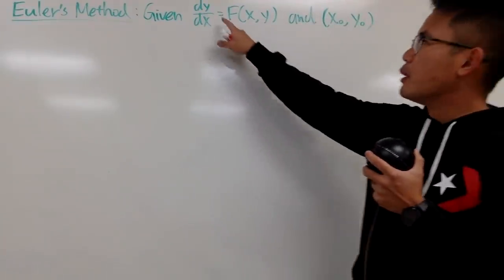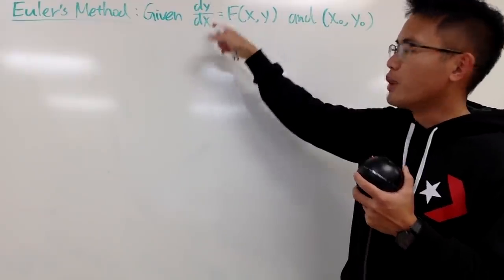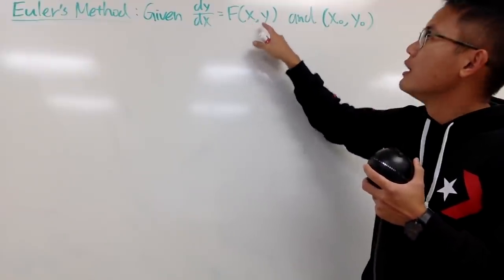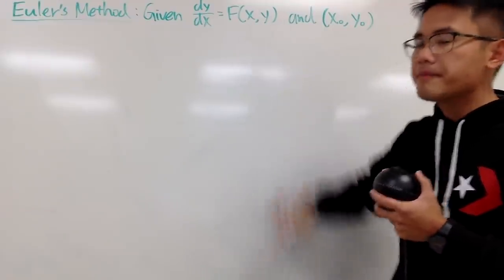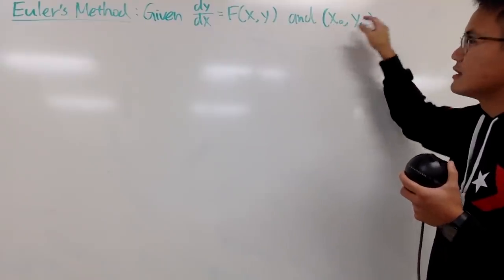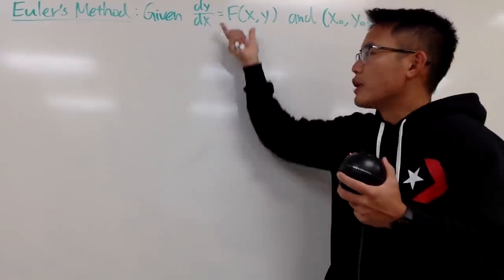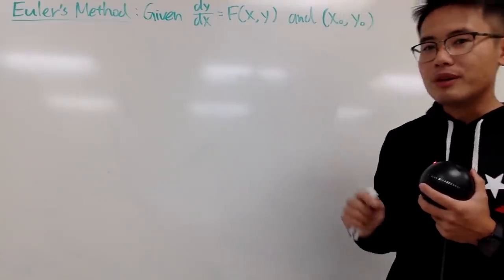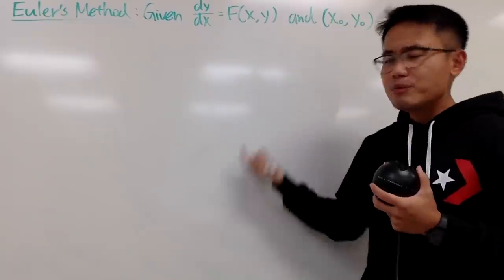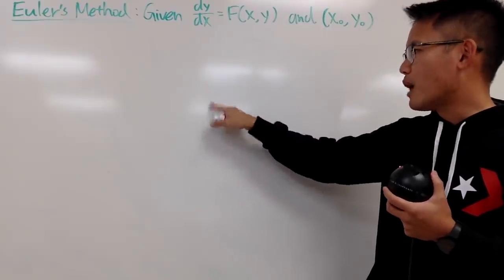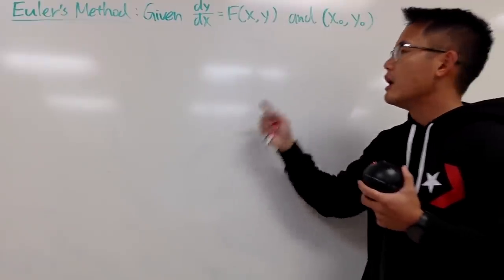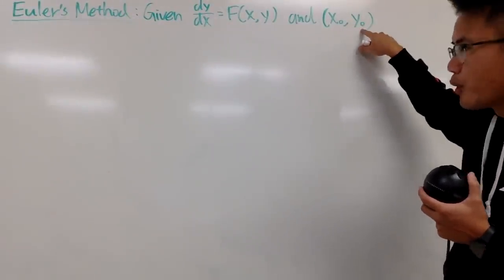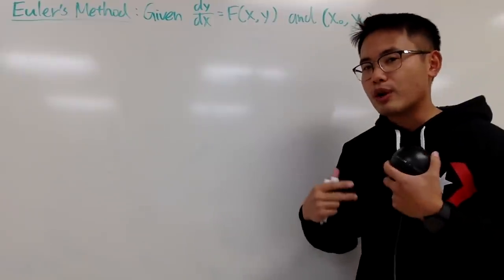Here's the idea. Suppose we were given the first derivative, the dy/dx, to be some expression in terms of x and y, and we are also given an initial point (x0, y0). Suppose this right here is pretty hard to solve — maybe we don't have a way to get y as a function of x. The idea is that we can actually somehow go from this initial point to get to the point that we're trying to get to.